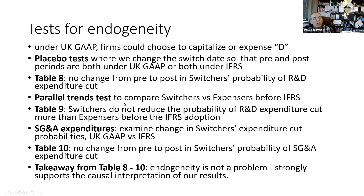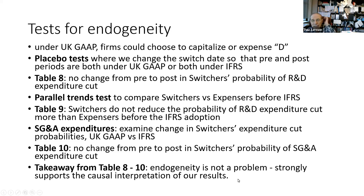We did extensive tests for endogeneity. We did placebo tests where we changed the switch date so that both pre and post periods are either totally under UK GAAP or totally under IFRS — and we found no results. We looked at parallel trends: they don't change their cutting behavior in the years before IFRS. SG&A expenditure cutting behavior does not change from pre to post, which is important because SG&A continued to be expensed. All these placebo tests are consistent with endogeneity not being a problem and support the causal interpretation that when the mandate came, these companies had to switch their accounting method, which caused them to switch their earnings management behavior.